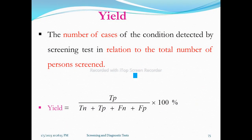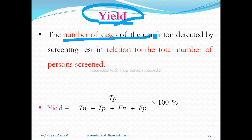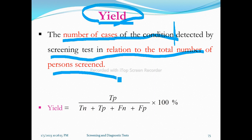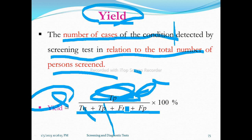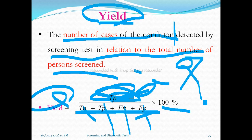Another important concept is yield. Yield is the number of cases of the condition or disease detected by the screening test in relation to the total number of persons screened. The formula is: true positive over the total — that is, A plus C over the total of all cells.